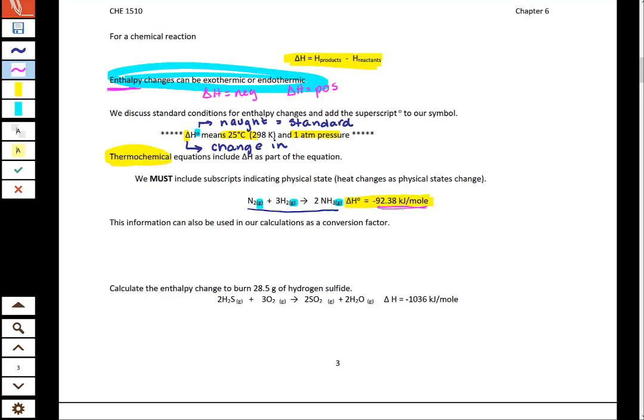What we're going to be able to do is use that delta H as part of a conversion factor. Remember the conversion factors that we could pull out of this before were something like one mole of nitrogen reacts with three moles of hydrogen. Now our conversion factors are going to include this 92.38.